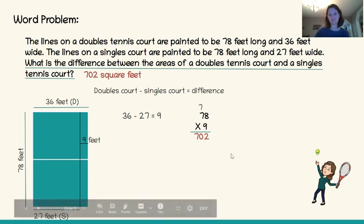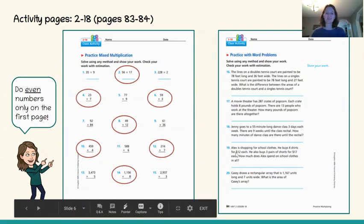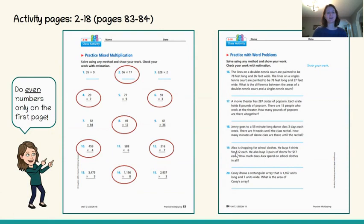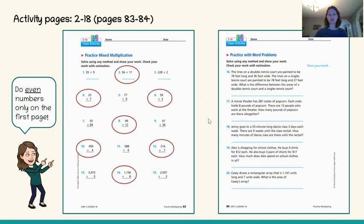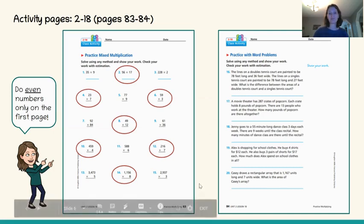I know you can do it. On the first activity page, just do the even numbers — check with your teacher, but doing the even numbers would be plenty. On the second page, we've already solved Question 16, so you have Questions 17, 18, 19, and 20 to work through together in your classroom. There is also an exit ticket that goes along with it. Have fun.